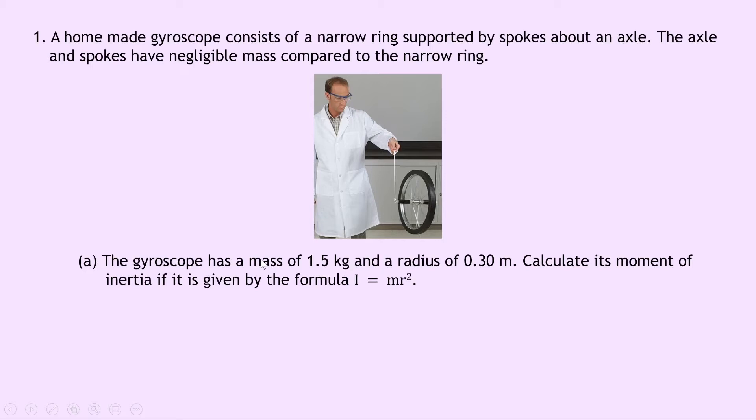So part A says the gyroscope has a mass of 1.5 kg and a radius of 0.30 m. Calculate its moment of inertia if it is given by the formula I = mr². Now luckily we're given the formula here, but common sense would tell us that we've got a narrow ring, so we would use the expression for the moment of inertia of a ring, which is I = mr².